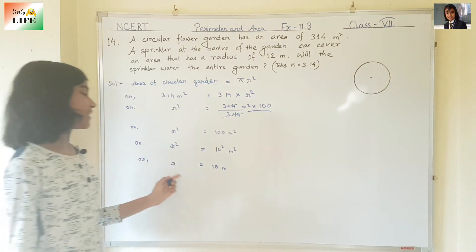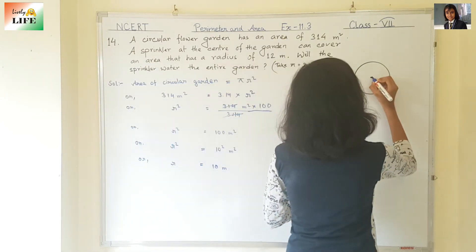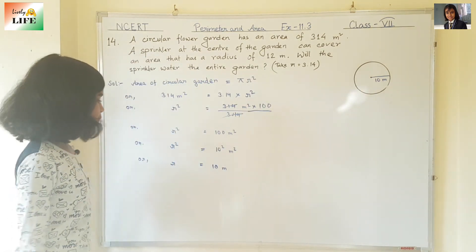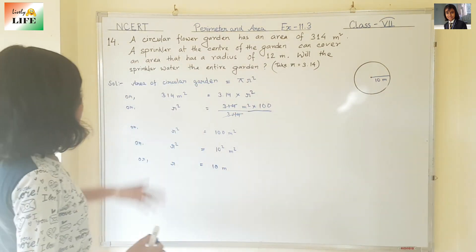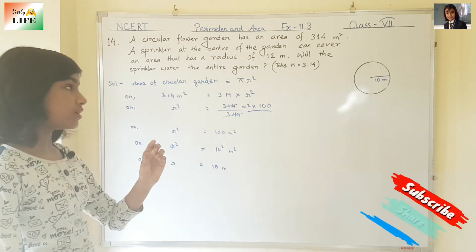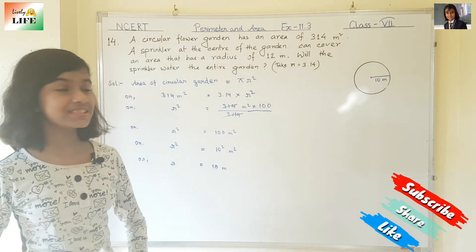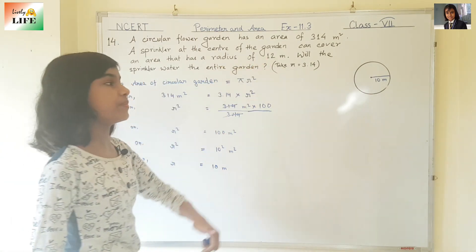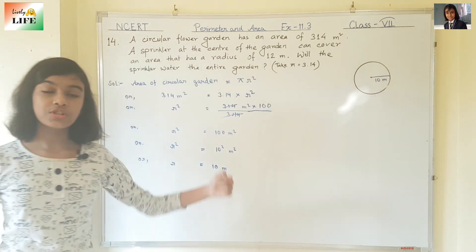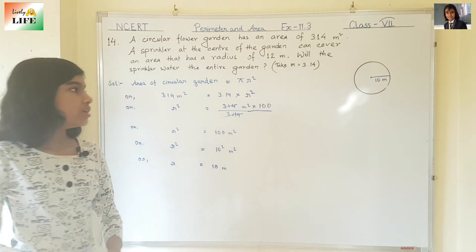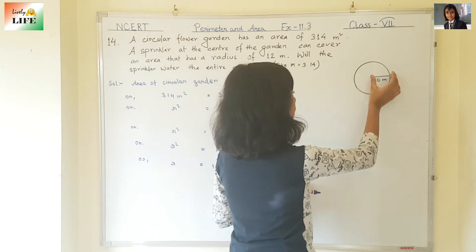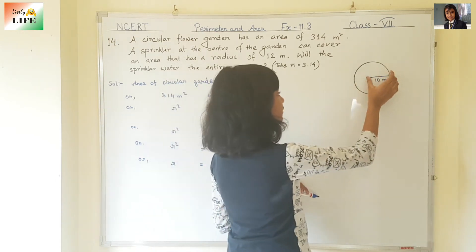The radius of this circular garden is 10 meter. Will the sprinkler water the entire garden? The radius of the sprinkler was 12 meter, and the radius of the circular garden is 10 meter. So 12 meter is greater than 10. The sprinkler's radius is 12 meter, meaning it will cover the entire garden and will extend 2 meter beyond.